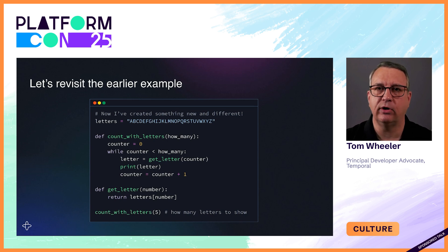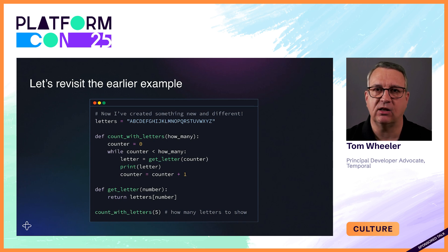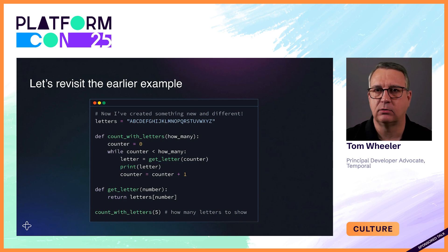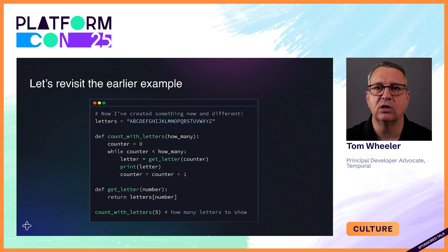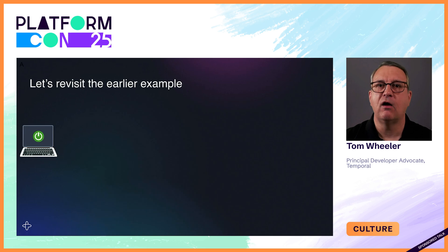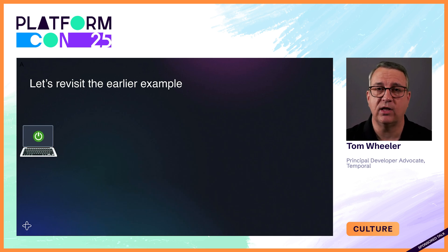Durable execution is easiest to grasp when you begin by looking at what happens without it. Let's revisit that earlier example — instead of stepping through the code again, I'll use graphics to illustrate how it's affected by a crash. After that, I'll repeat the scenario with durable execution so you can see how it survives the crash.